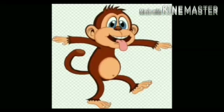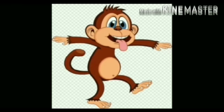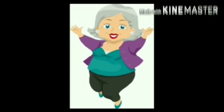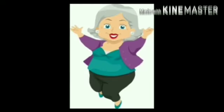When they reached home, the grandmother refused to have a monkey in the house. She said, 'You have enough pets as it is,' referring to grandfather's goat, several white mice, and a small tortoise. When the grandmother saw the little monkey, she did not accept it. According to her, there were already enough pets in the home — a goat, white mice, and a small tortoise — so she did not want any more pets.